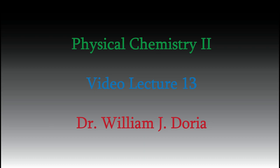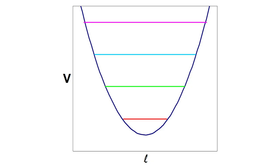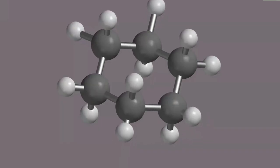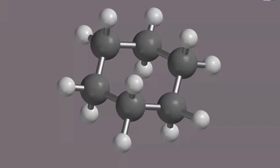Hi and welcome again to my videos for Physical Chemistry 2. In the last video we looked at vibrational energy and we saw that the quantum mechanical model we use to understand molecular vibrations is called the harmonic oscillator. Today I want to tell you more about molecular vibrations and what they're like, and we'll start to see that they are a bit more complex than the simple stretching vibration that we looked at last time.